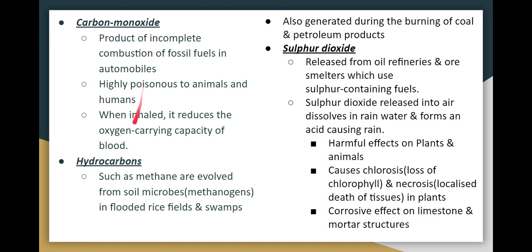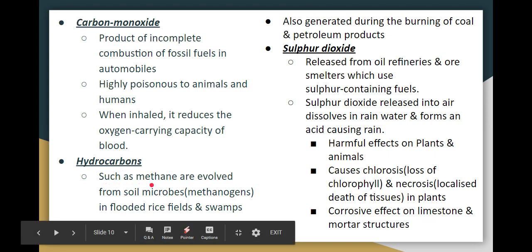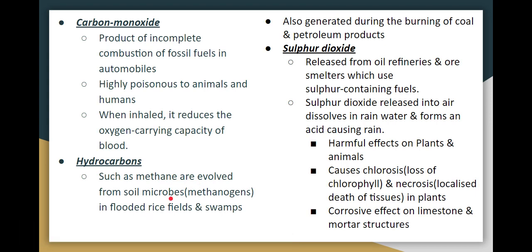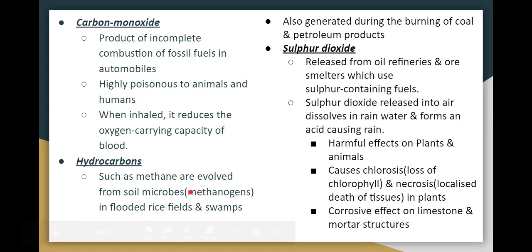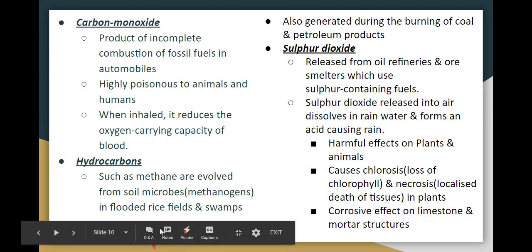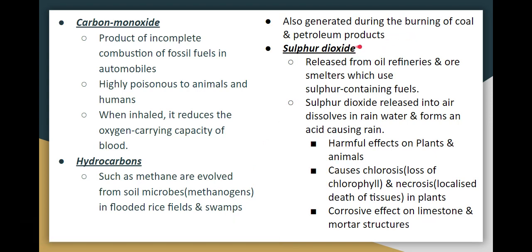Next is hydrocarbon, such as methane. Methane is a hydrocarbon. It is produced from rice fields, where soil microbes act on organic matter. Coal and petroleum products, when burned, also generate hydrocarbons.